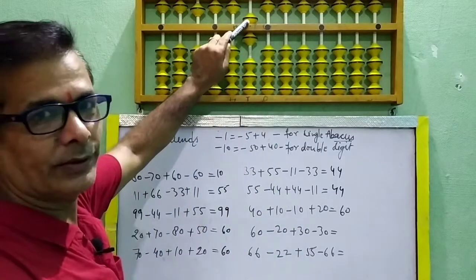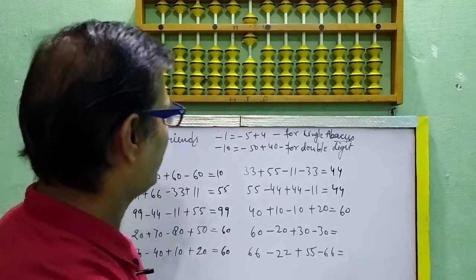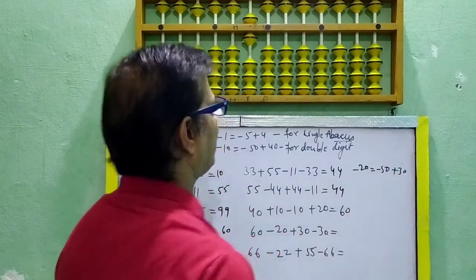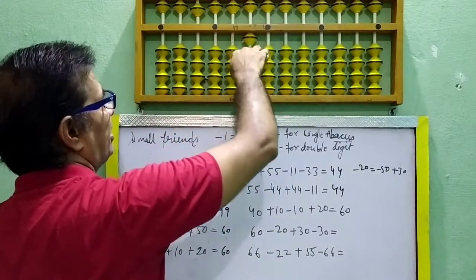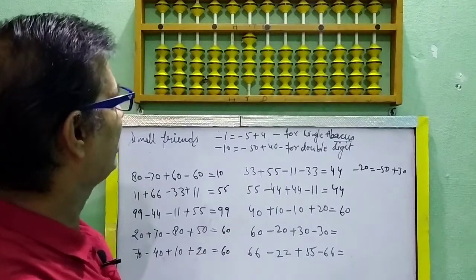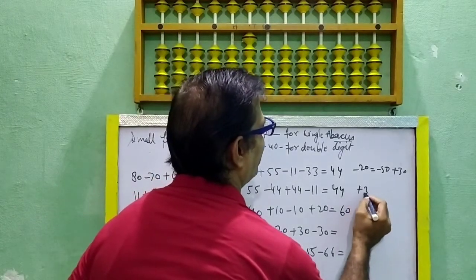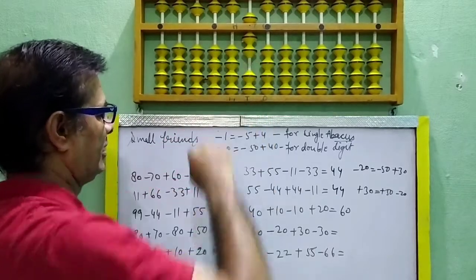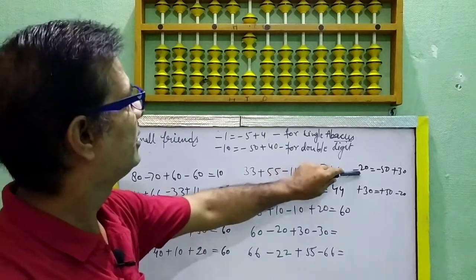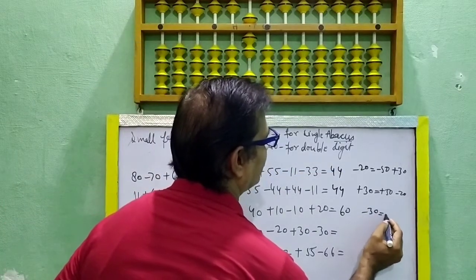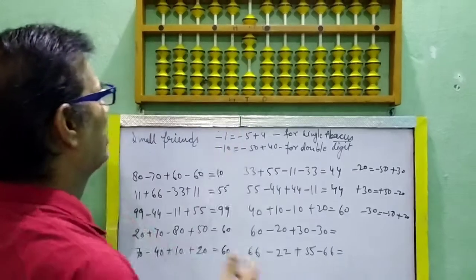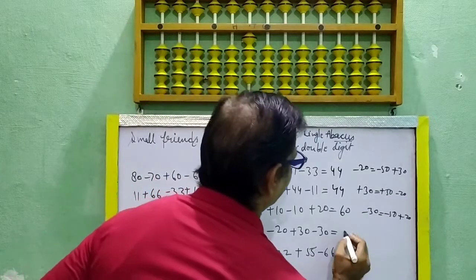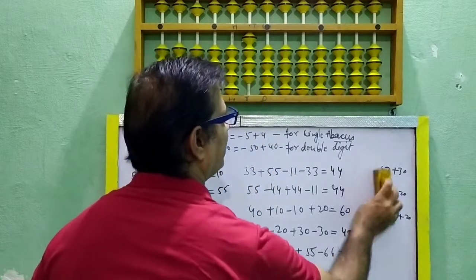Next question: 60. Direct 60 — 50 plus 10. Minus 20. Minus 20. Then minus 30. Minus 30 formula: minus 30 is equal to minus 50 plus 20. Minus 50 plus 20 — 20. So your answer is here: 10, 10, 10, 10 — which means 40. Okay, come to the point.